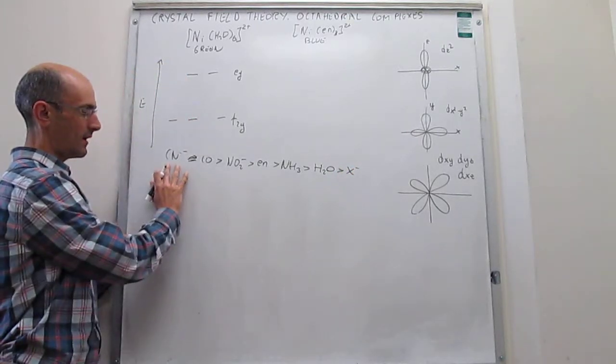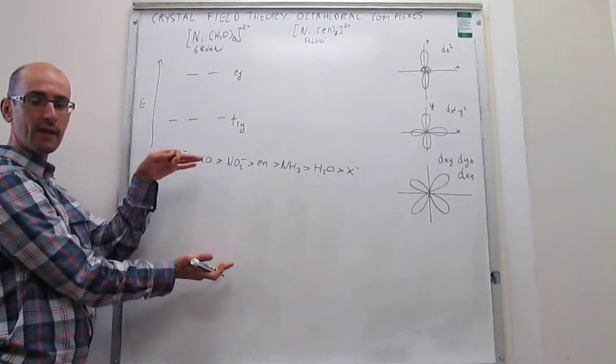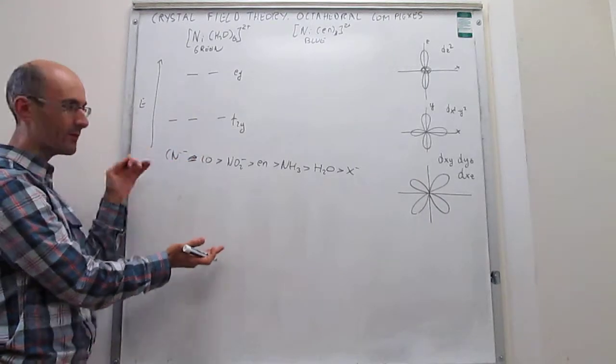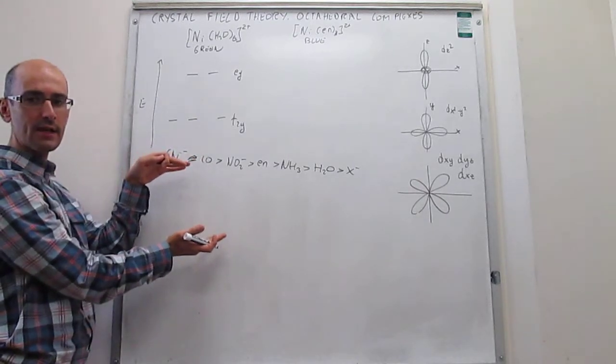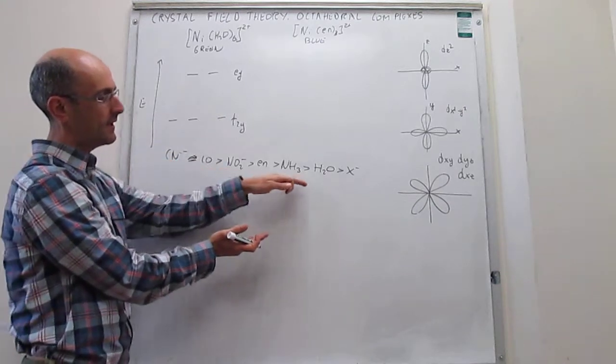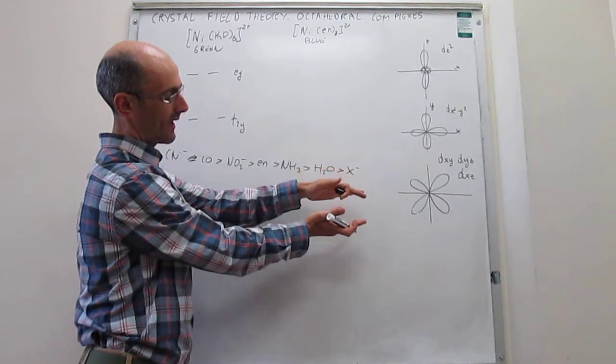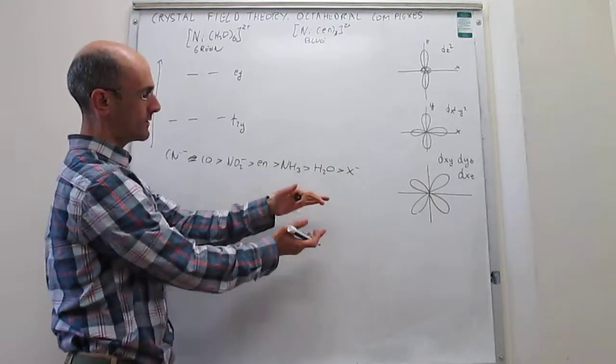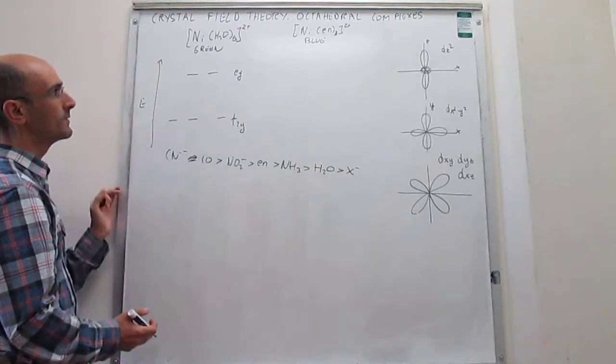This tells you that these are ligands where the gap between those two sets of orbitals is very high, we call these strong-field ligands. And these are ligands where the gap is much smaller, so that will be a weak-field ligand.